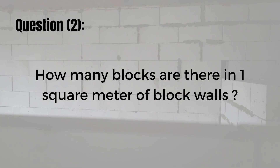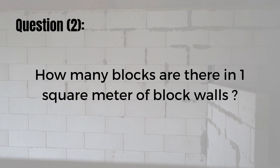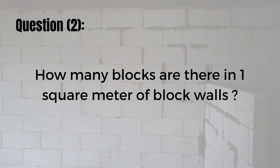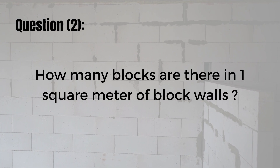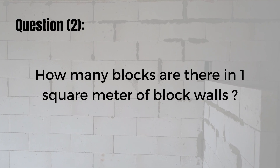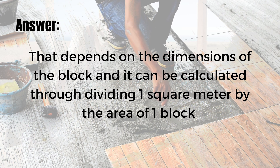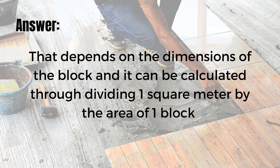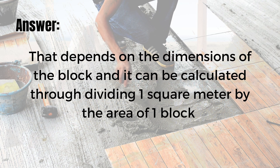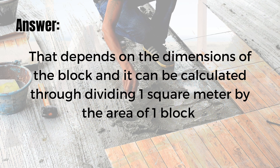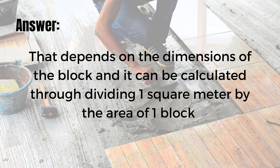The second question is: how many blocks are there in one square meter of block walls? A similar question can be asked for tiles, for example. The answer depends on the dimensions of the block or tile, and it can be calculated by dividing one square meter by the area of one block or one tile.